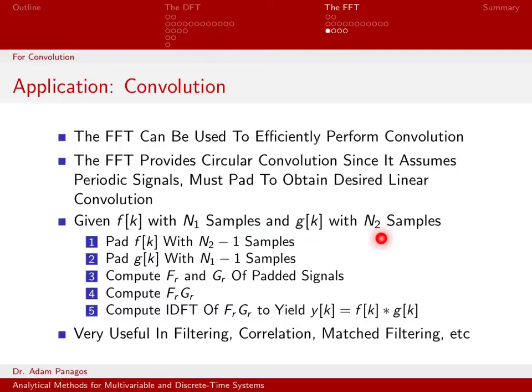So we're going to pad the signal f[k] with N2 - 1 samples. We're actually going to add zeros, and the number of zeros we add is going to be N2 - 1. And we're also going to pad g[k]. We're going to pad it so we get to N1 - 1 samples.